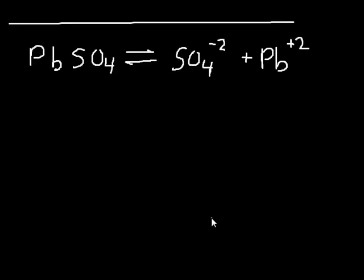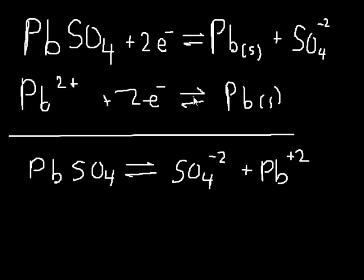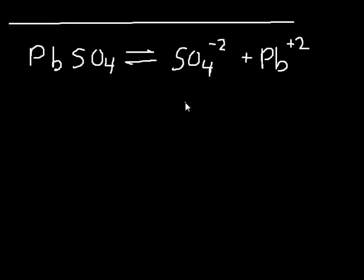So the point of this is I can use the standard reduction potentials in a table to find the equilibrium constant for this, and then from that I can find the Ksp and Gibbs free energy and other things like that. So let's check this out.